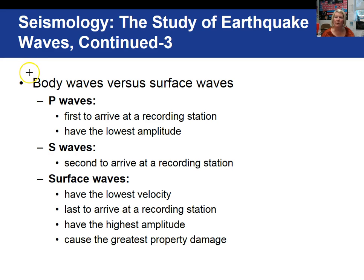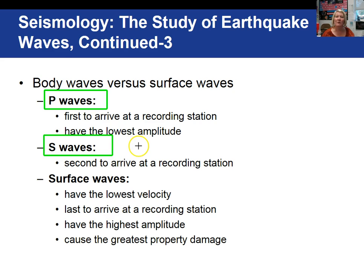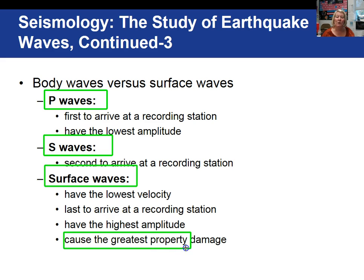Let's look at body and surface waves in more detail. P waves — the compressional slinky waves — are moving the fastest and have the lowest amplitude. The greater the amplitude of a seismic wave, the more energy it's carrying and therefore the greater potential for damage. S waves move a little slower than P waves, so they're the second to be recorded at the seismograph. Finally, surface waves have to travel around the outside of the Earth, so they move the slowest but have the highest amplitude, meaning higher energy, and cause the greatest property damage.